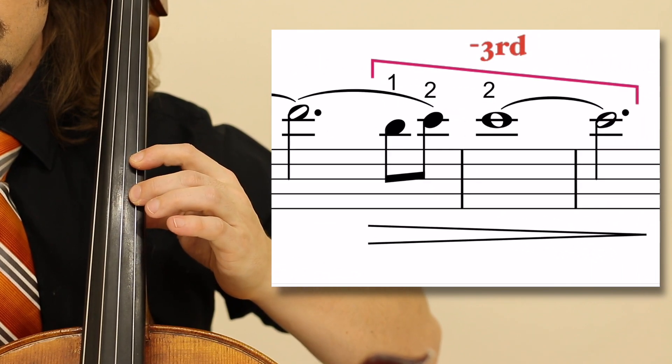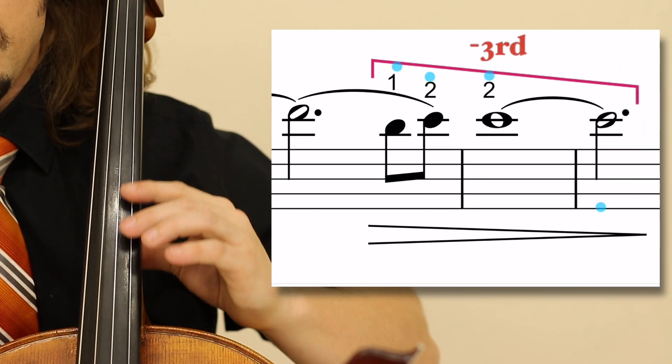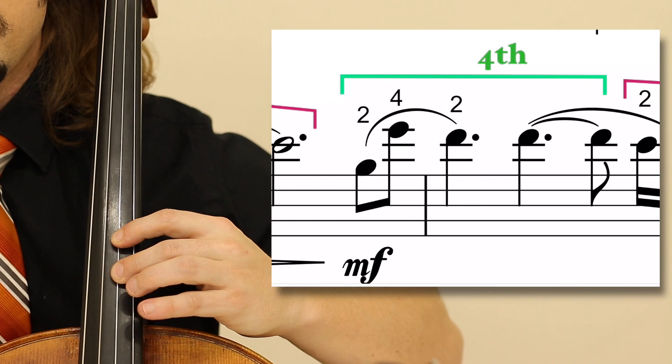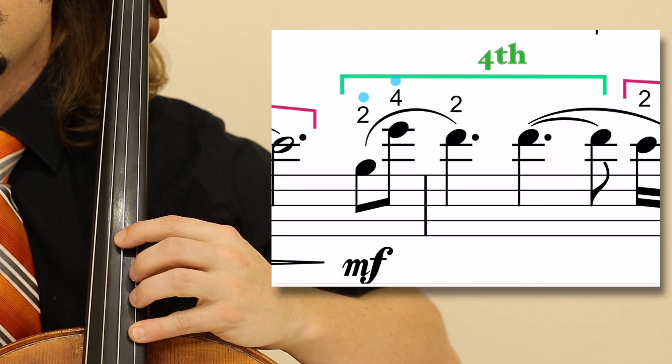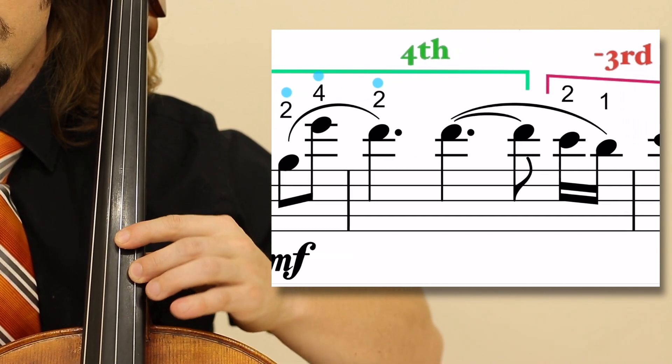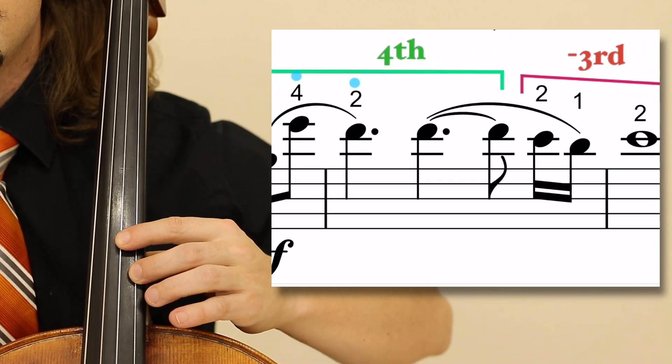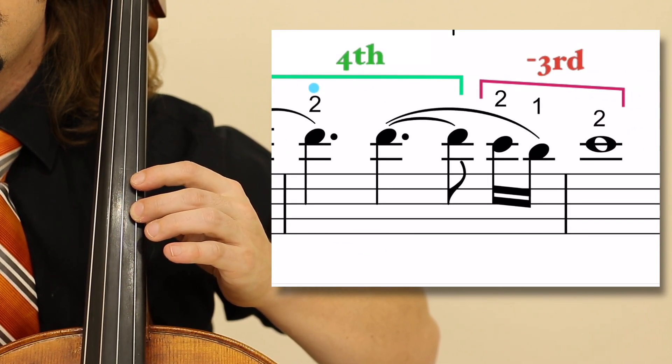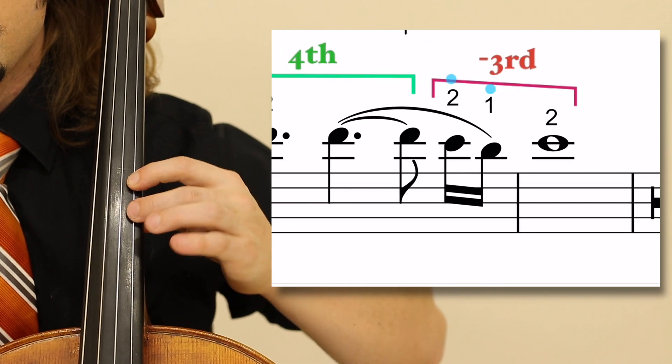And then one, two, two—those are E flats. Then you go to fourth position, two on the B flat, four on the G natural, then two on the F natural, staying there. For the sixteenth note, shifting back to lower third position, two, one, two.